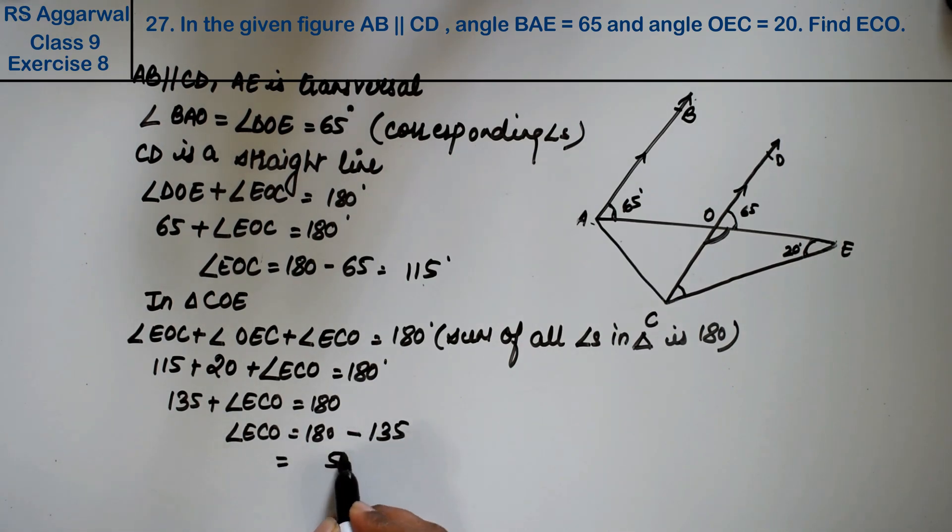So how much is it? 5 from 10 is 5, 7 from 8 is 1, sorry, 1 from 7, 45 degrees is the answer.